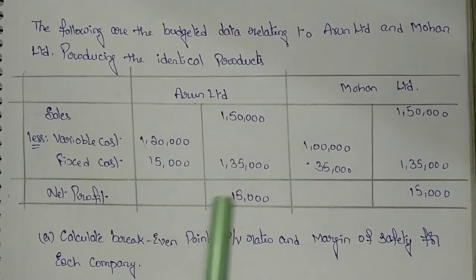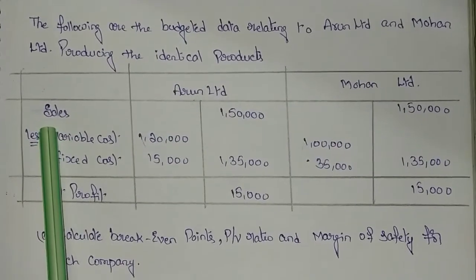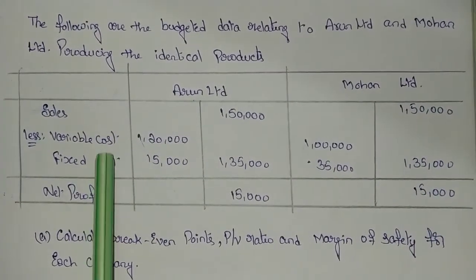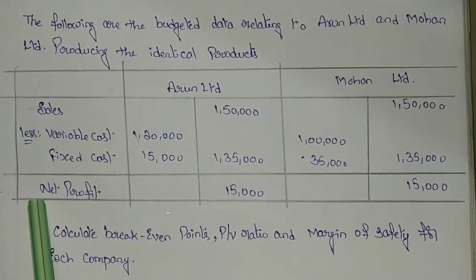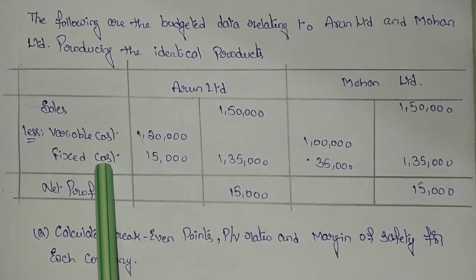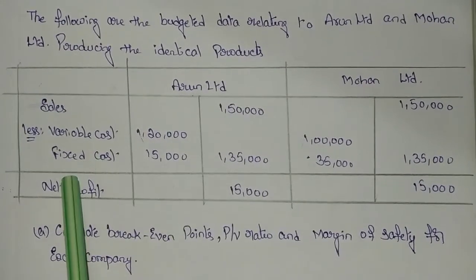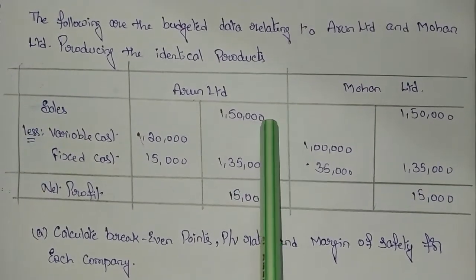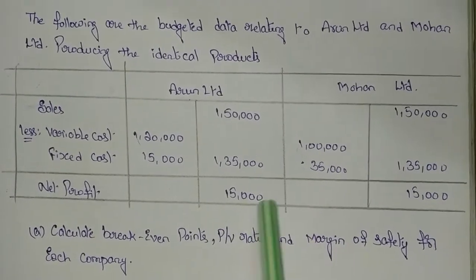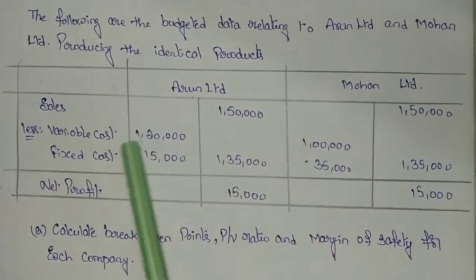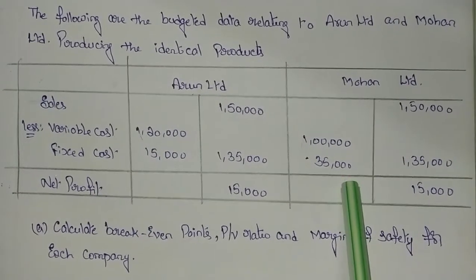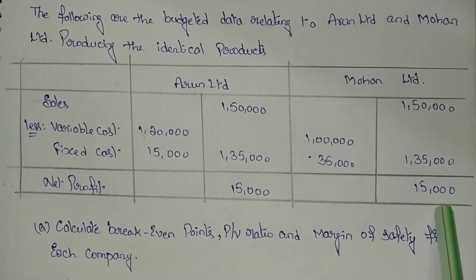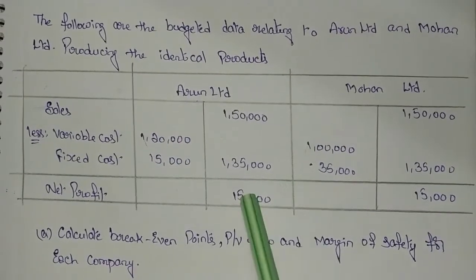Let us see the information provided. Arun Limited and Mohan Limited both have the same sales of 1,50,000 rupees each. From sales, if you deduct total cost you will get the net profit. Total cost consists of fixed cost and variable cost. For Arun Limited, variable cost is 1,20,000 and fixed cost is 15,000, giving total cost 1,35,000 and net profit of 15,000. For Mohan Limited, variable cost is 1,00,000 and fixed cost is 35,000, total 1,35,000, and net profit is 15,000.